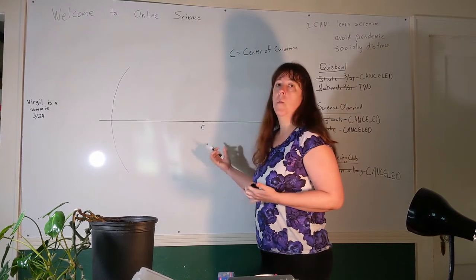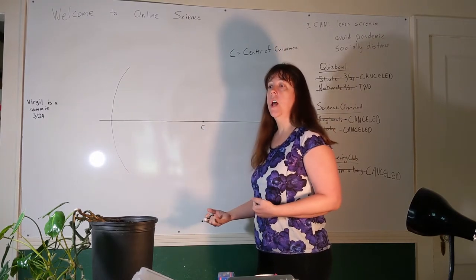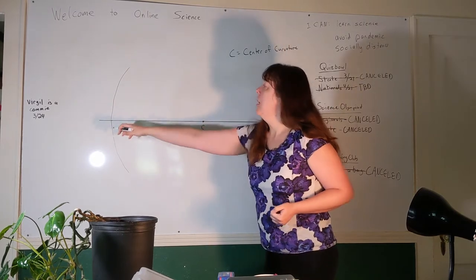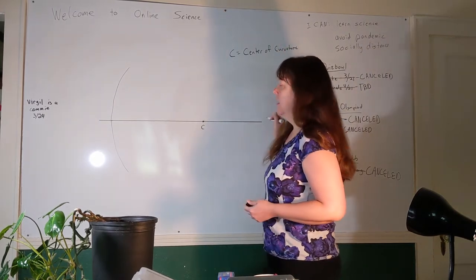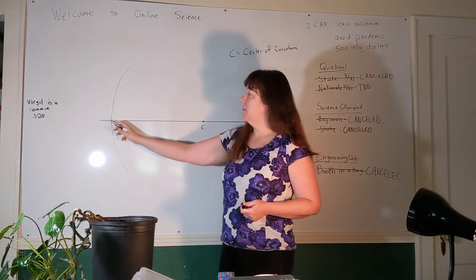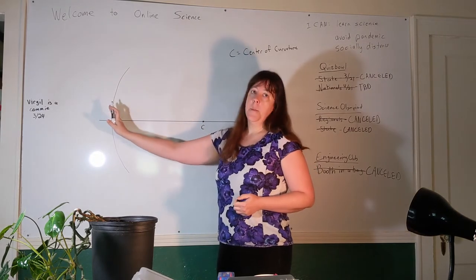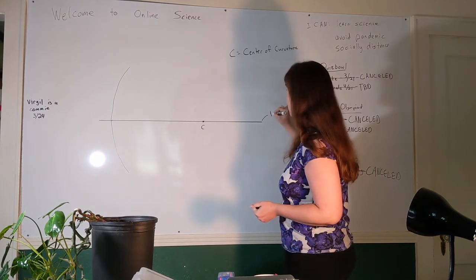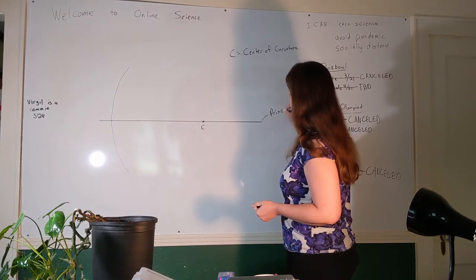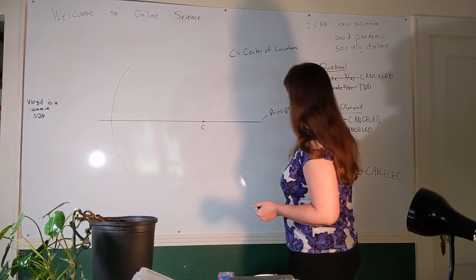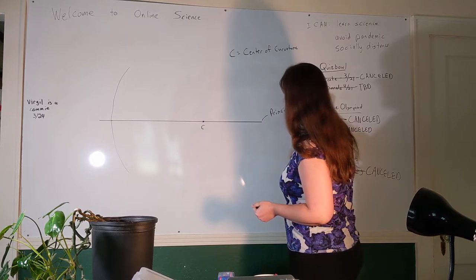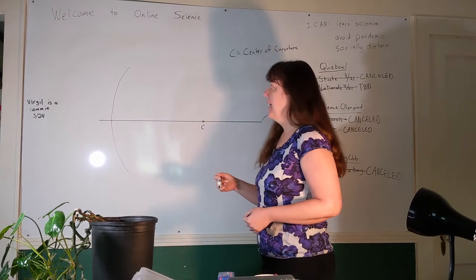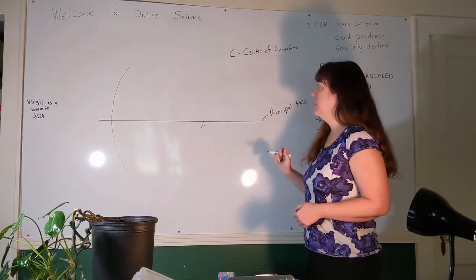Sometimes the center of curvature is one of the ways a problem will give you information about the mirror and its properties. We've drawn the curved mirror and this line — a long straight line that intersects the curved mirror right at the point where they're perpendicular to each other. This line is called the principal axis — that's P-A-L as in 'first,' not P-L-E as in 'belief.' So: principal axis.